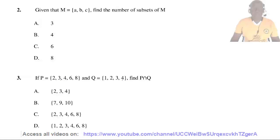Question 2. Given that the set M equals A, B, C, find the number of subsets of M. The number of subsets of M is given by 2 to the power N, where N is the number of elements. The number of elements in this case is 3: 1, 2, 3. So 2 to the power 3 equals 8. So the answer is D.